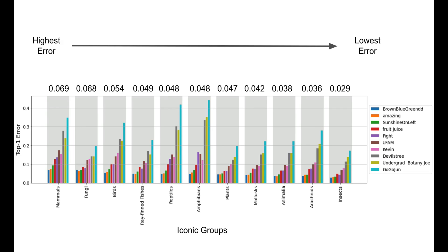We can break down the 10,000 species into iconic groups and look at the top-one error within those groups. This sort order is based on the performance of the first place team, Brown Blue Green DD, whose average score is printed above each group. Mammals have the highest error rate with a value of 0.069, followed by fungi, birds, fish, reptiles, amphibians, plants, mollusks, the catch-all group of animalia, arachnids, and finally insects, which had the lowest error rate with a value of 0.029.